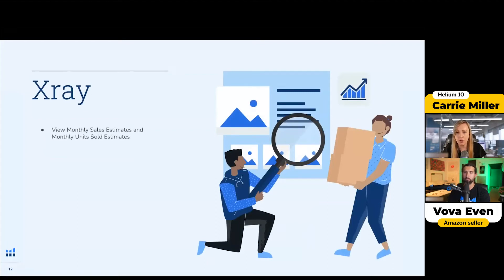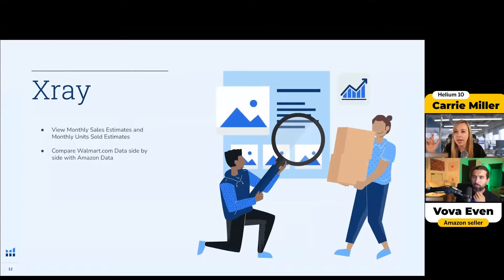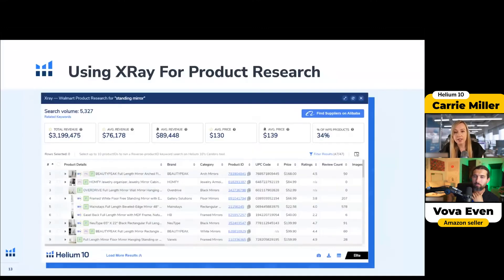X-ray — this one was really helpful for me, especially to see what the competition was and what the potential is. You can view the most monthly sales estimates and monthly units sold. You can also compare the data side by side with Amazon data if we have it, so if we're able to connect it with an ASIN on Amazon, we'll pull the data into X-ray so you can see it side by side and identify different areas to beat your competition.